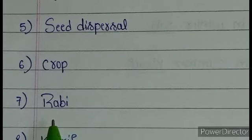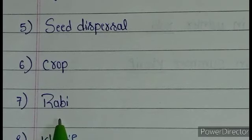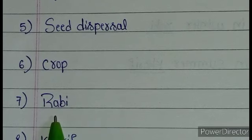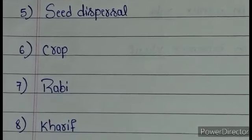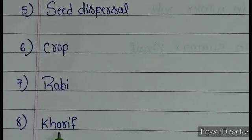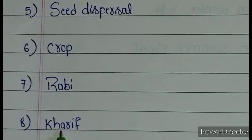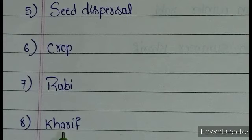The next keyword is rabi. A crop grown in winter season is called a rabi crop. And the next keyword is kharif. Kharif means a crop that grows in summer season is called kharif.